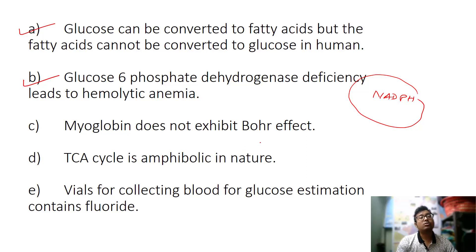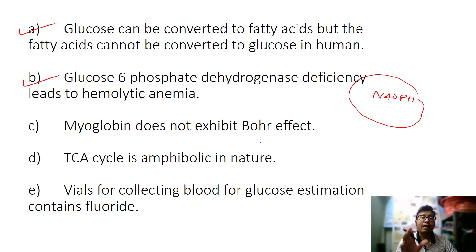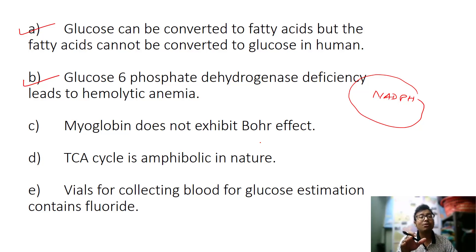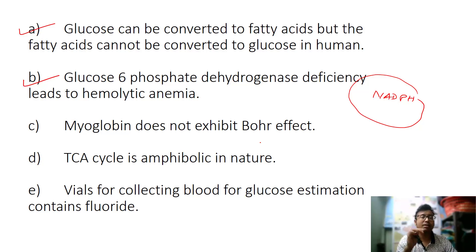If G6PD is deficient, there will be reduced NADPH production, glutathione will not be reduced, and reduced glutathione cannot protect membranes from free radical injuries. Reactive oxygen species like superoxide and hydrogen peroxide attack RBC membranes causing hemolysis. This also explains why G6PD deficiency patients show hemolysis on administration of the antimalarial drug primaquine — it adds oxidative damage. The malic enzyme is only a minor NADPH source and is quickly insufficient, so G6PD deficiency manifests.